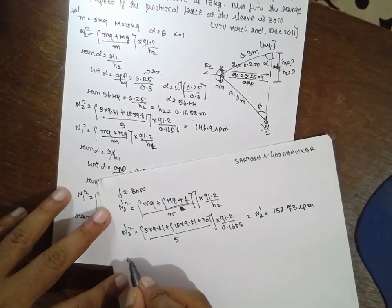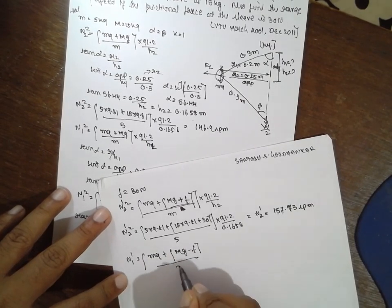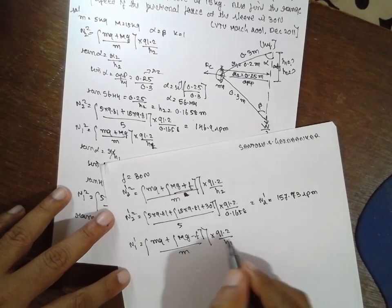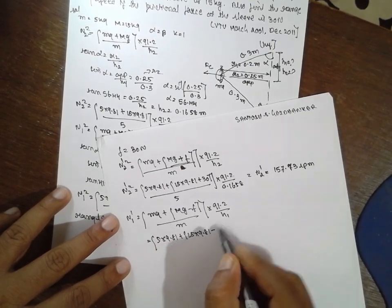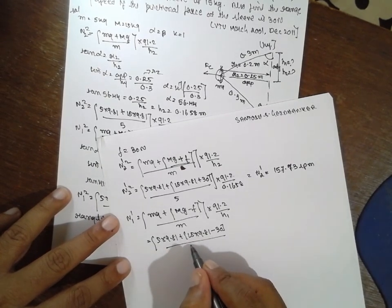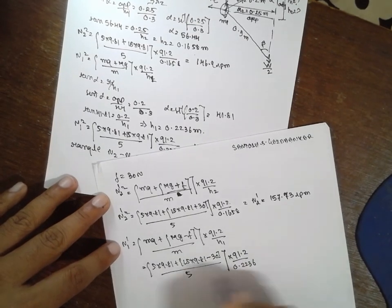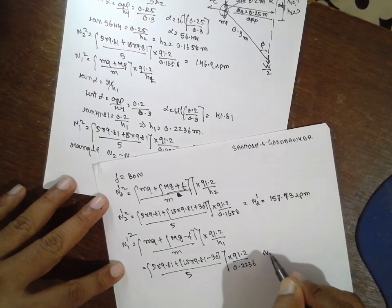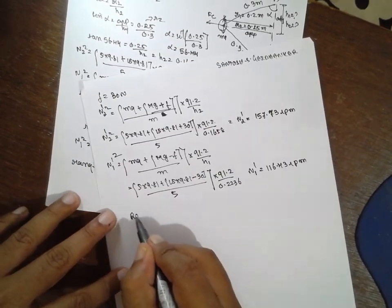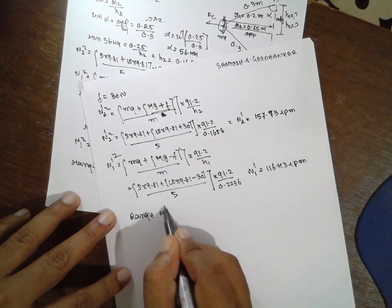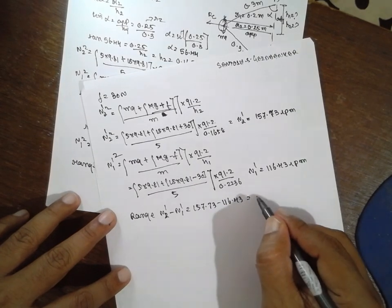For N1 dash, the formula is: N1'² = (mg + Mg − f) divided by m, multiplied by 91.2 divided by h1. Substituting: (5 × 9.81 + 15 × 9.81 − 30) divided by 5, multiplied by 91.2 divided by 0.2236. This gives N1' = 116.43 RPM. The range with friction is N2' − N1' = 157.73 − 116.43 = 41.3 RPM.